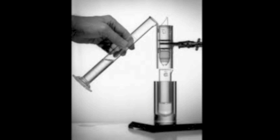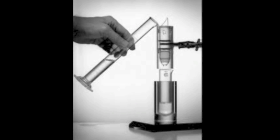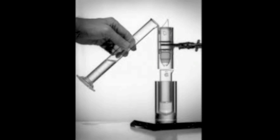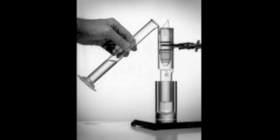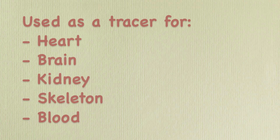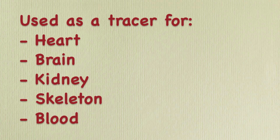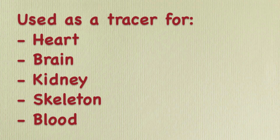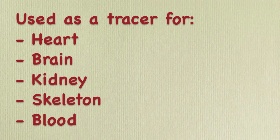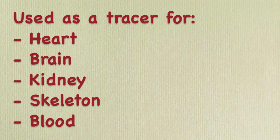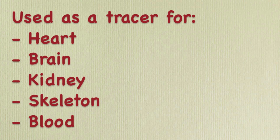In order to trace a particular organ in the body, Technetium-99m is bonded with a chosen pharmaceutical suitable to the organ being analysed before being injected into the body. This will create a radiopharmaceutical, which can deposit in certain organs once it has entered the body. As a tracer, Technetium-99m is used for all parts of the body, such as the heart, brain, liver, kidney and skeleton, and even throughout the bloodstream.